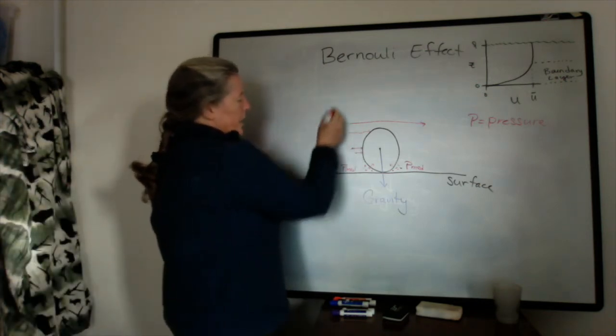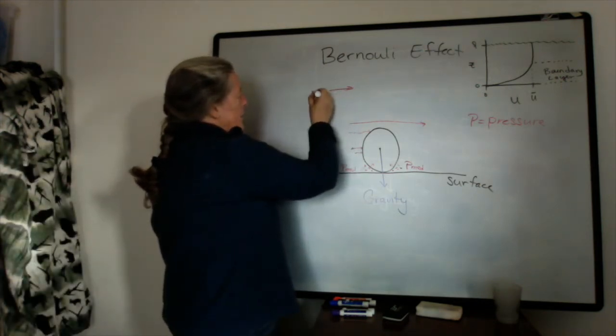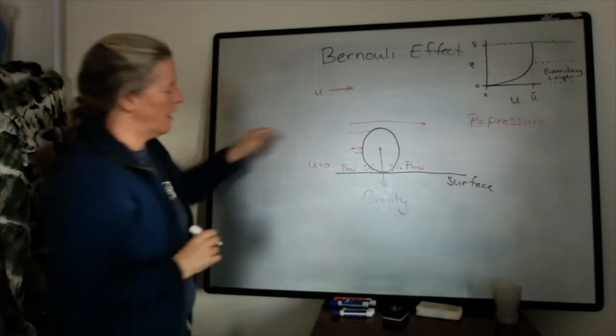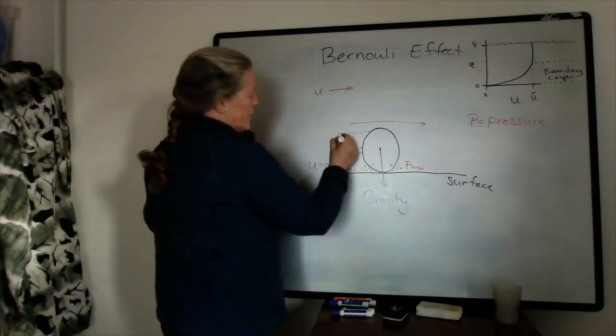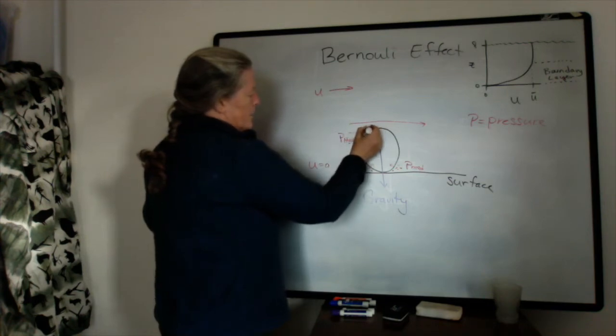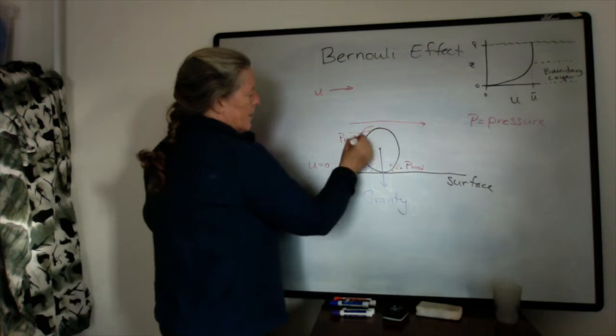So on the upstream side of the grain here, we have our flow speed left to right, what we end up with is a high pressure on the upstream side of the grain.